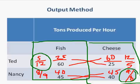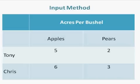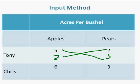That would be the output method. The input method works the same way — we're going to find the opportunity cost. Only now the output is fixed and the input is variable. Because of that, we are still going to do the cross-division, but we're going to put the numbers under each other.